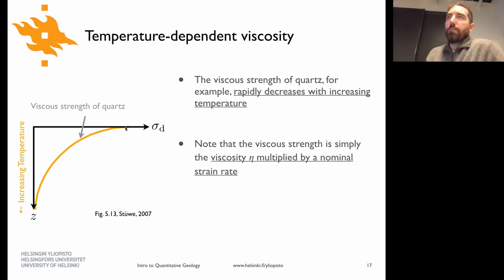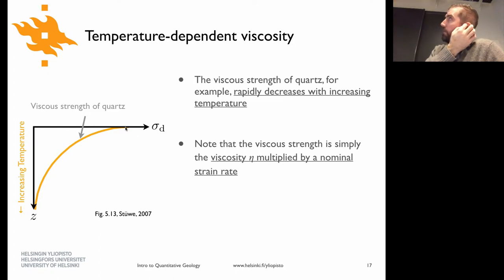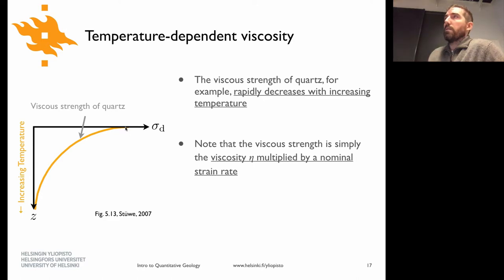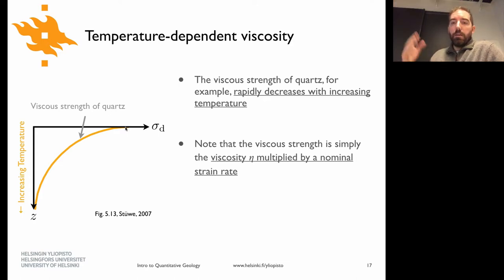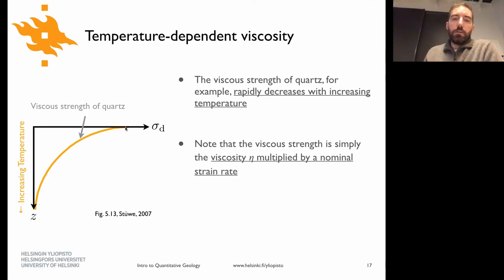You go from basically conditions where faults form and rock behaves in a brittle way near the surface, to maybe 15 to 20 kilometers depth in most places where rock already starts to behave more in a viscous-like fashion. By the time you're down 15 or 20 kilometers depth, rock is a lot weaker than it was at the surface.